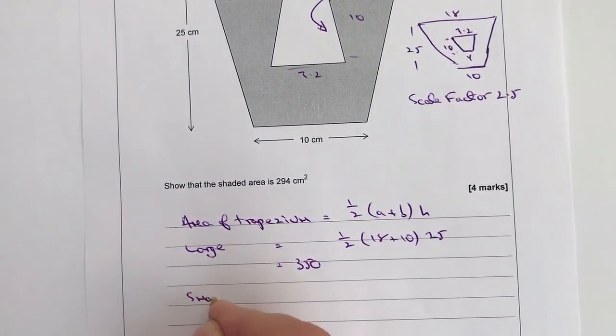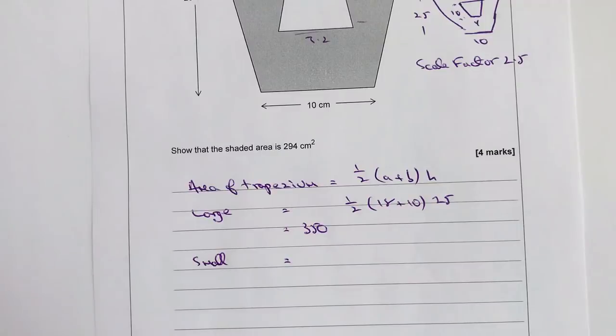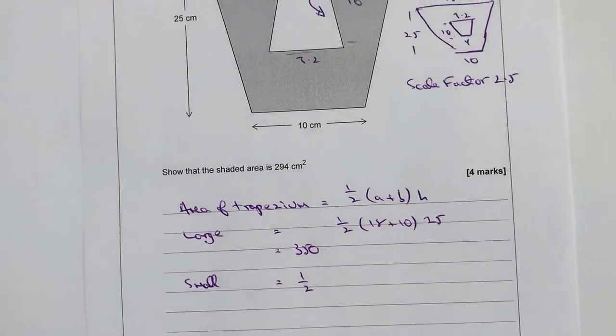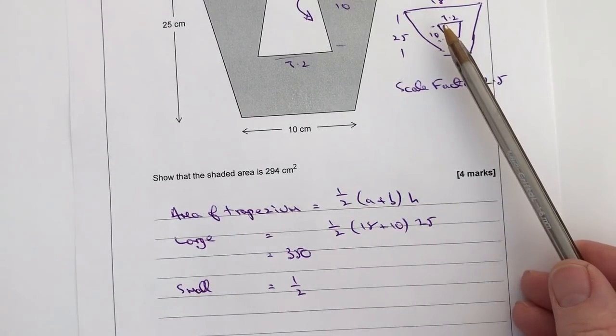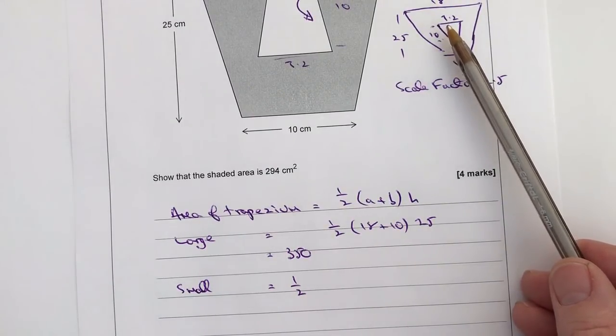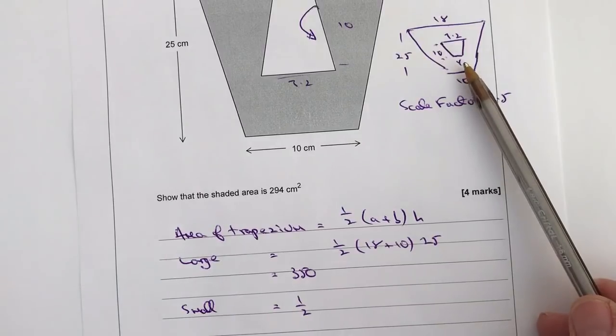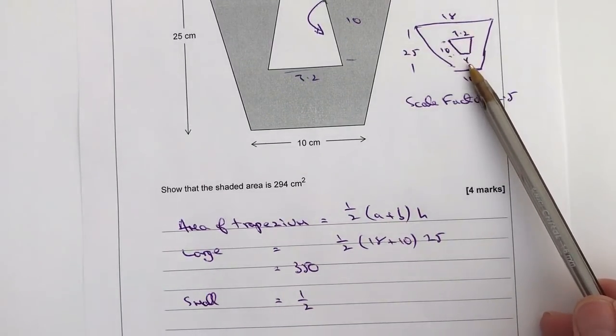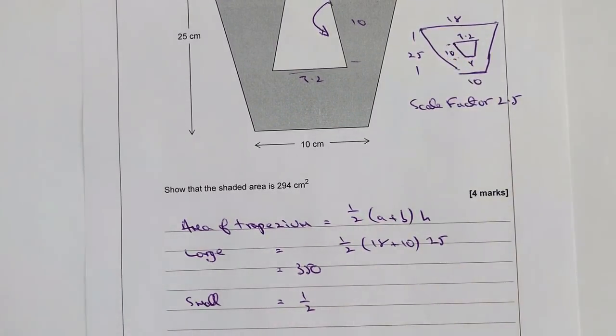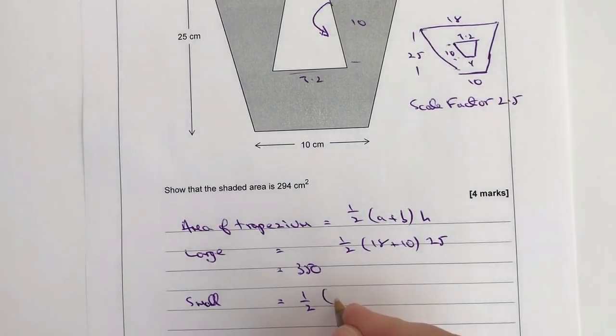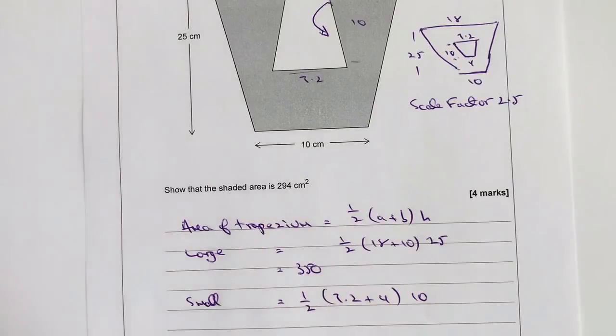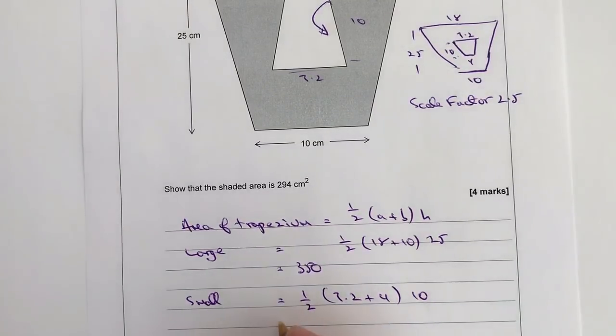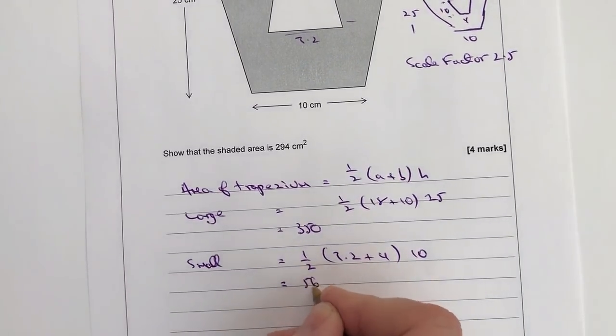I then look at the small, and again, I'm going to use exactly the same formula. I got a half, but this time, if we go to what I've worked out, I've got 7.2, and that's going to be plus 4, so 7.2 plus 4, and then the height is 10. So if I pop that into my calculator, I've got 7.2 plus 4, multiply by vertical height of 10, and that's going to give me 56.